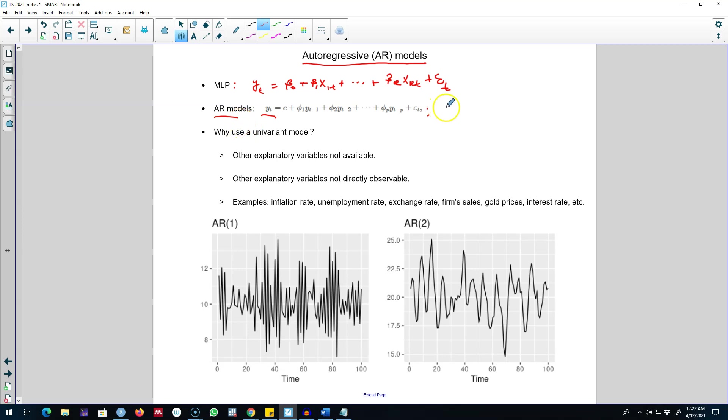Now this type of model is called an autoregressive model, and in this case this model is called AR(p) model because we are including p lags of yt in this model. This p is sometimes called the order of the AR model, so we can regress yt on its p lags and call this an AR model.